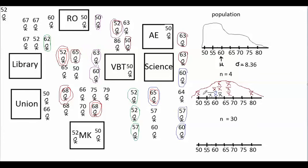All of the sample means in this distribution actually have a mean and standard deviation of their own. It turns out that the mean or center point of the sampling distribution is actually the same as the population mean — the mean of the sampling distribution always equals the mean of the individual population members. The symbol for the mean of a sampling distribution is mu x-bar (μ_x̄), which is mu with an x-bar subscript.